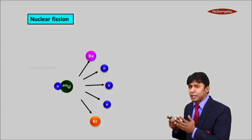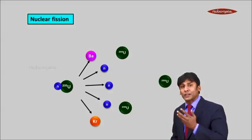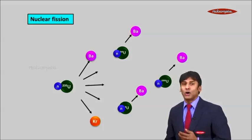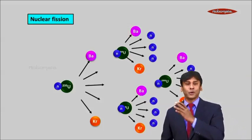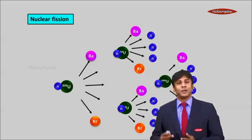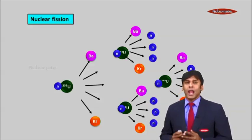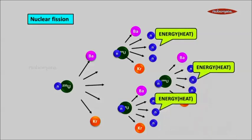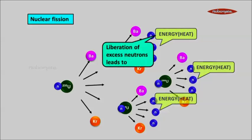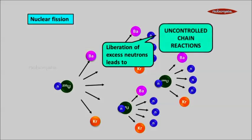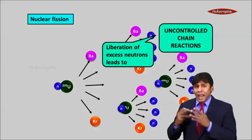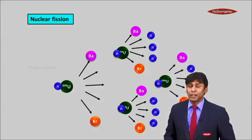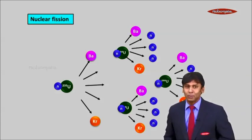This process doesn't end here. It will continue because these three neutrons will go further and hit three separate uranium-235 atoms, ejecting nine neutrons. These nine neutrons will further go and hit nine uranium-235 atoms. In a very short time, a huge amount of heat energy is generated. This is an example of an uncontrolled chain reaction. If this reaction is not controlled, in a very short span of time, a huge amount of energy is generated and it can be used for a destructive purpose—the atom bomb.